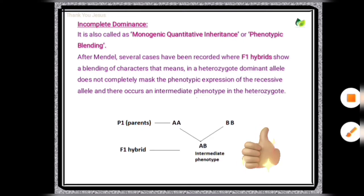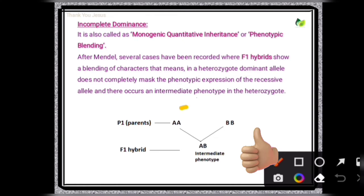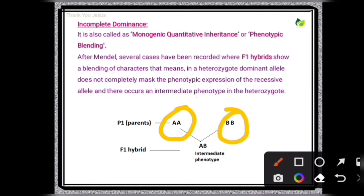Look at the cross. When an AA parent is crossed with a BB parent, according to the law of dominance proposed by Mendel, the heterozygote — the F1 hybrid — should express only one of the alleles, called the dominant allele, which masks the other allele. But here the situation is different; it is an exception to Mendel's law. Here the heterozygote expresses an intermediate phenotype, and such a cross is called incomplete dominance.